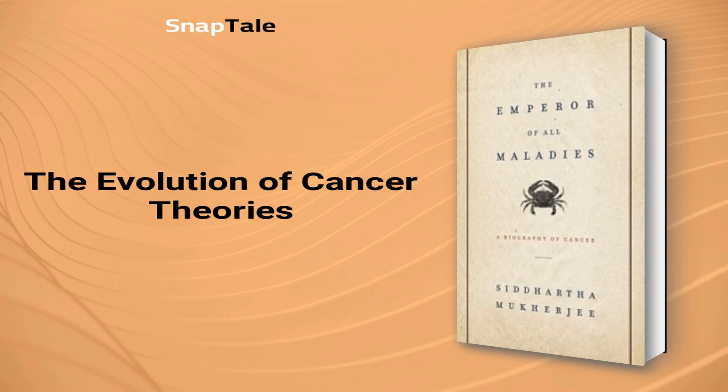Scientists then turned to external agents like miasmas, worms, fungal spores, and protozoa as possible causes of cancer, until the 1926 Nobel Prize winner Johannes Feibiger was proven wrong for believing roundworms caused stomach cancer. Today, cancer is understood as a complex disease with various causes.